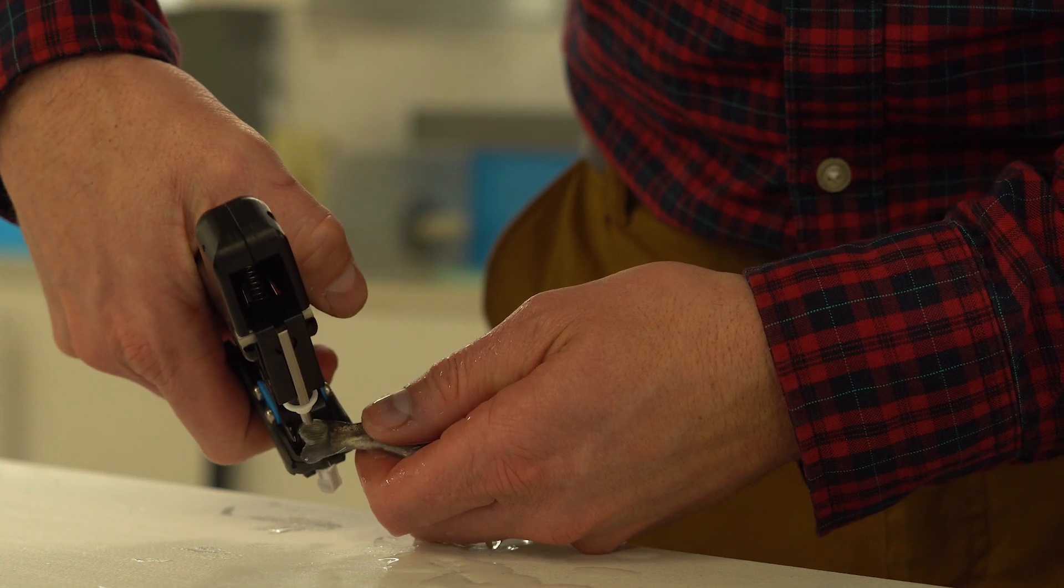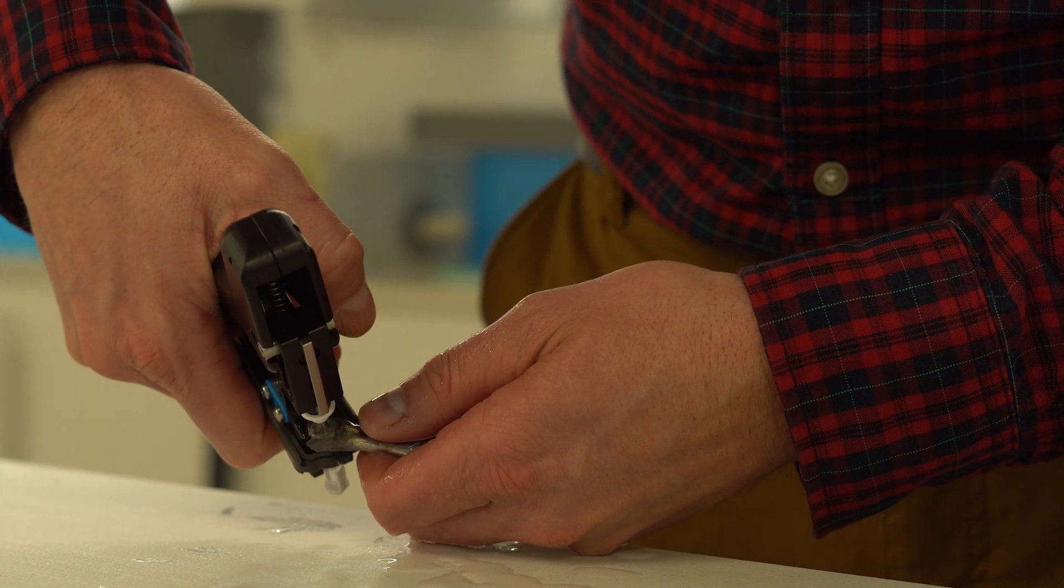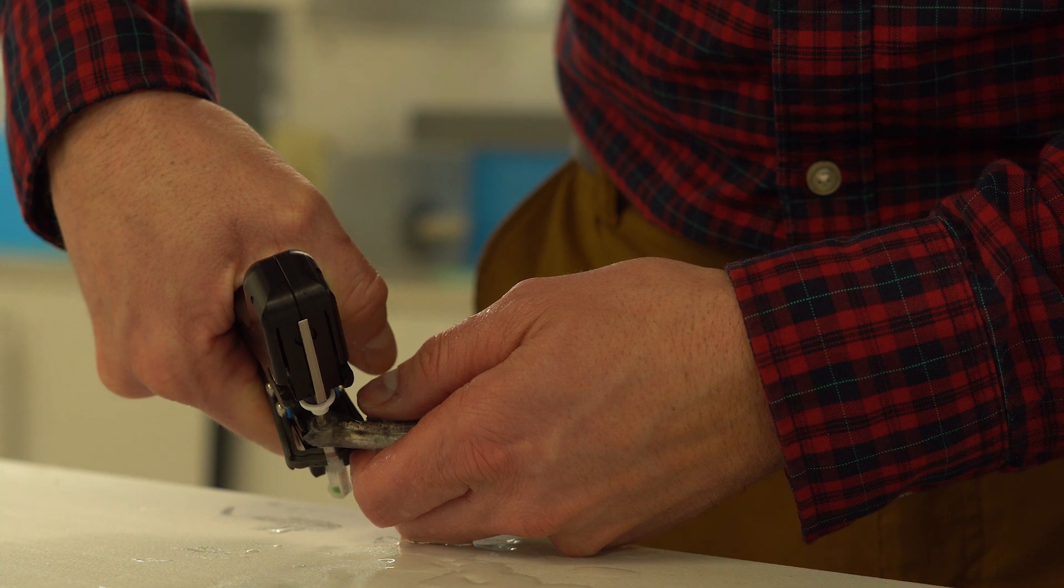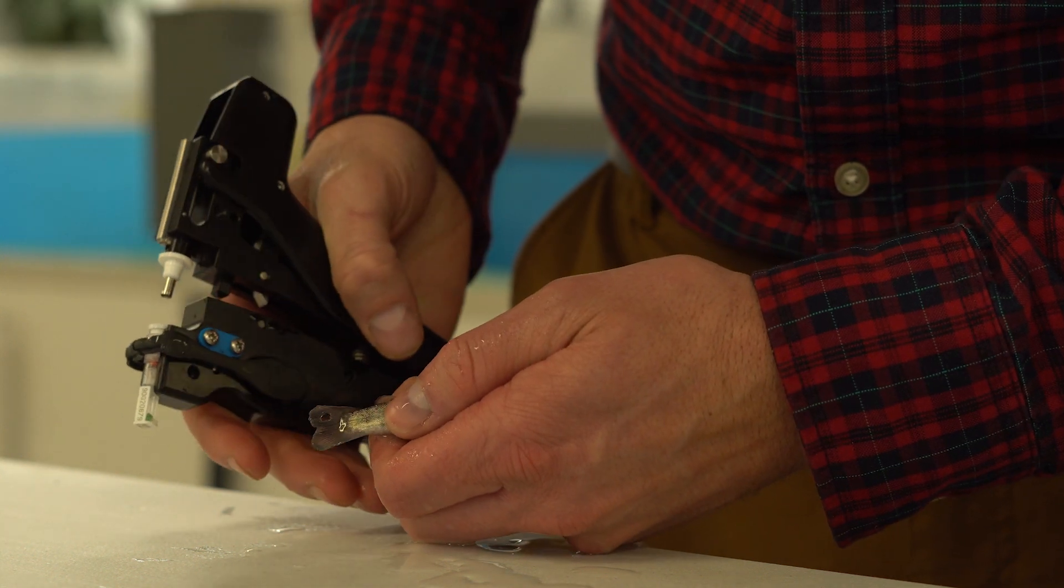Here's an example of a tail clip being taken on a smaller juvenile fish. A clean 3 millimeter diameter section should be visible when a proper sample is taken.